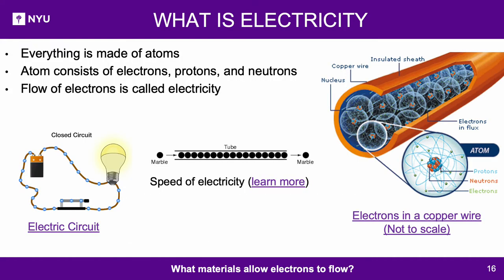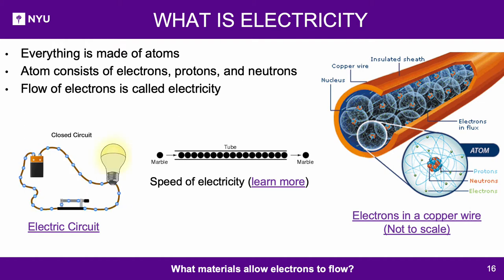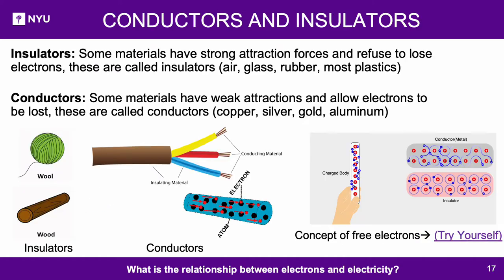What is electricity? We know that everything is made of atoms, and an atom consists of electrons, protons, and neutrons. Electrons can jump outside their atoms when pushed by a force called voltage or potential difference, causing them to flow in a material. Not all materials allow flow of electrons in the same way. Materials in which charge carriers — usually electrons — can move easily from one atom to another when voltage is applied are called conductors. Materials in which electrons cannot flow freely, where atoms have tightly bound electrons, are called insulators.